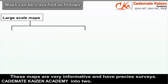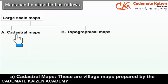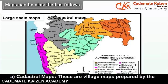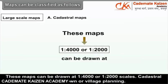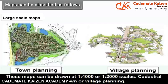Large-scale maps are further divided into two. A: Cadastral maps — these are village maps prepared by government agencies. They are very useful for keeping records of land properties with accurate boundaries. These maps can be drawn at 1:4,000 or 1:2,000 scales. Cadastral maps are necessary for town or village planning.